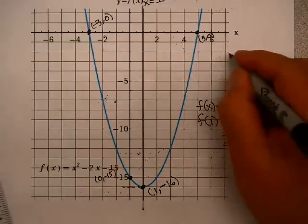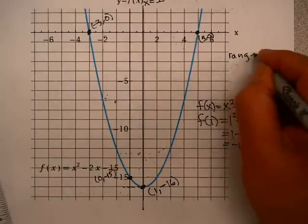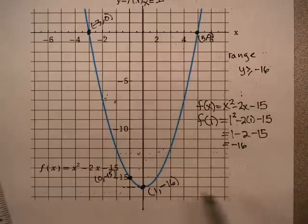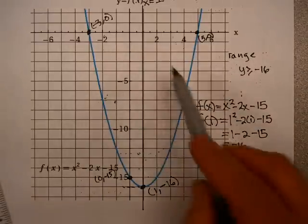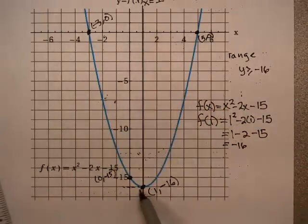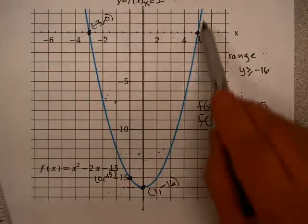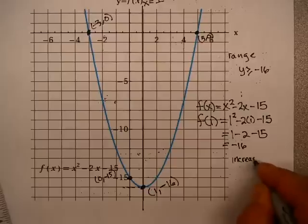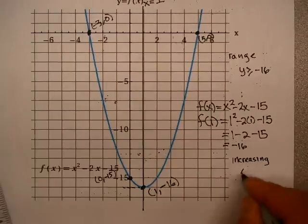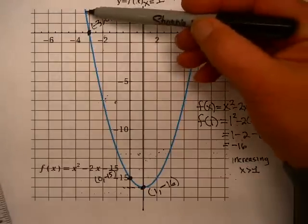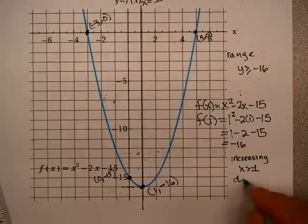So your range is y is greater than or equal to minus 16. And what about increasing and decreasing? Clearly, looking at the graph, moving left to right on the x-axis, the function is increasing from this point onward. So it's increasing for x is greater than 1. And it's decreasing for x is less than 1.